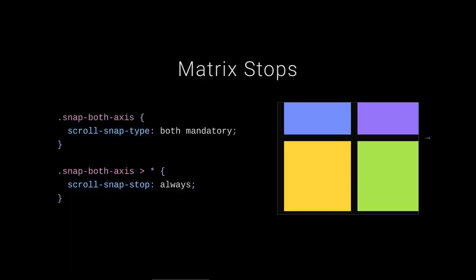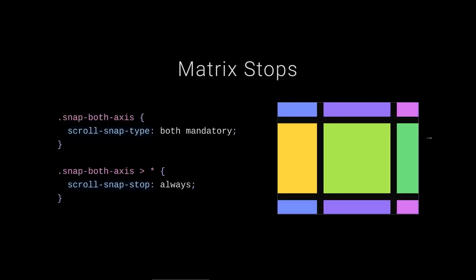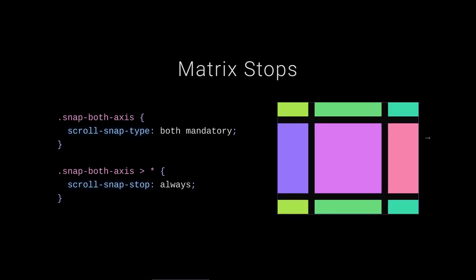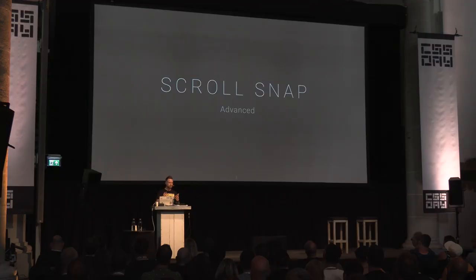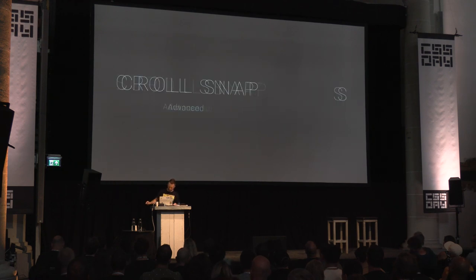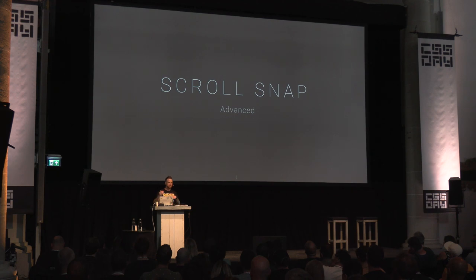You can tell certain items to explicitly stop at various spots — it's useful but could also be annoying to users, so be careful. You can also have matrix stops — snap stop on every item in every direction. That's good to know is possible. Now let's move on to scroll snap advanced — the fundamentals that unlock the really cool tips and tricks.